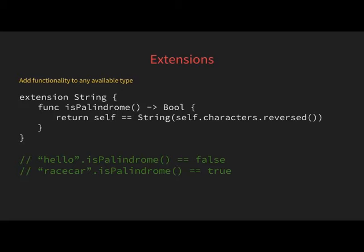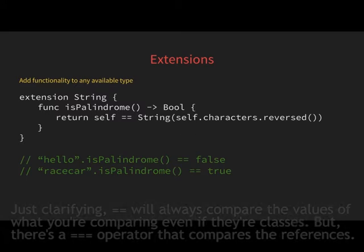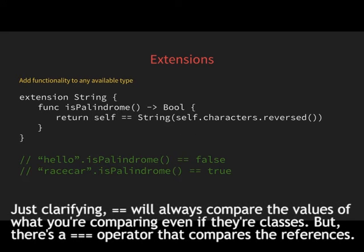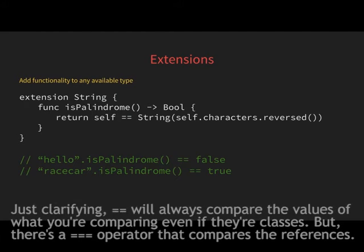To clarify: equals-equals always compares the values of what you're comparing. If you want to compare the references of two things specifically, there is a triple-equals operator ('===') that compares references.